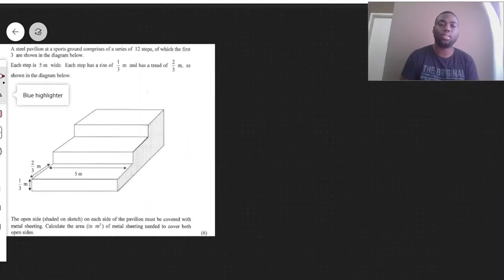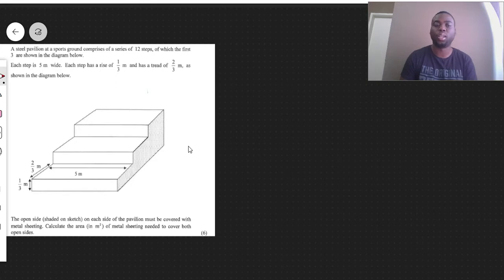The question says a steel pavilion at a sport ground comprises of a series of 12 steps for which the first three are shown in the diagram below. Each step is 5 meters wide and each step has a rise of 1 over 3 meters and has a tread of 2 over 3 meters as shown in the diagram below.